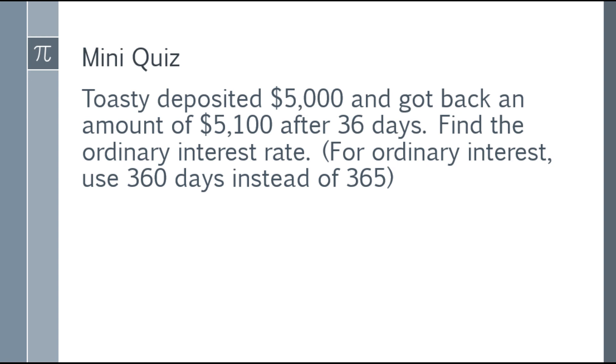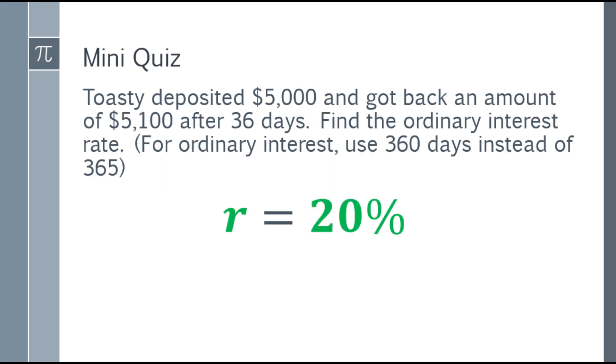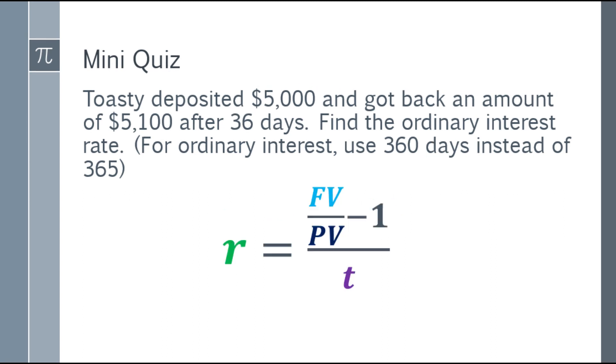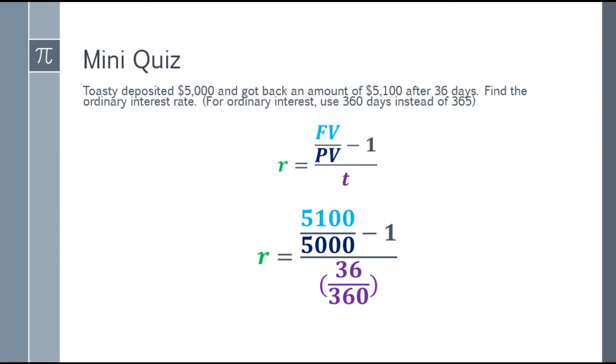And the correct answer is 20%. How did we get 20%? Let's place the formula and substitute the given. He deposited 5,000 and it became 5,100. So that will be 5,100 over 5,000, the answer minus 1, that will be the numerator part. For the denominator, it says ordinary interest rate, so your 36 days will be 36 over 360 instead of 365. For ordinary interest rate, divide by 360 not 365.